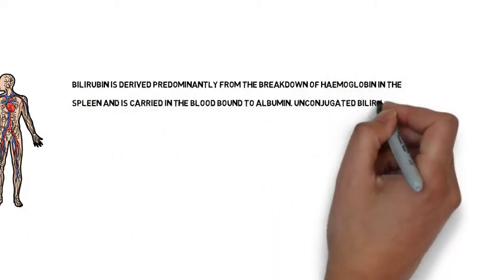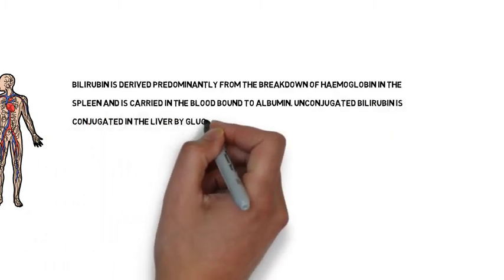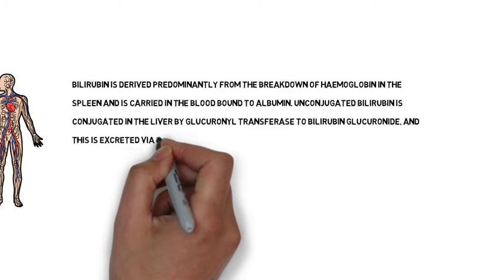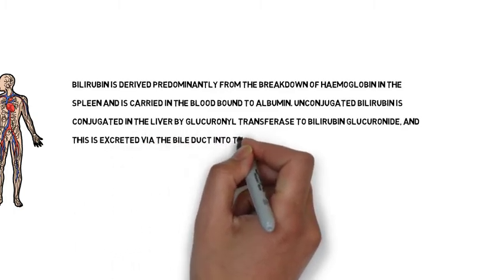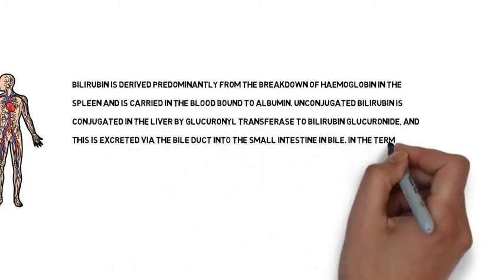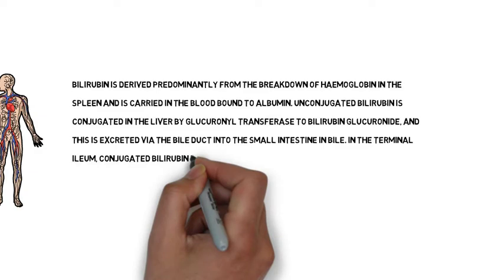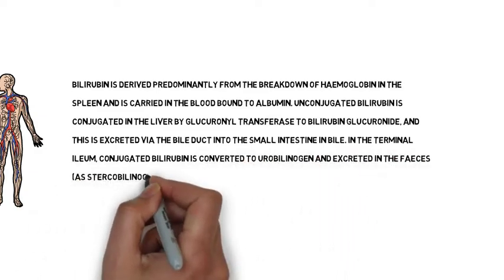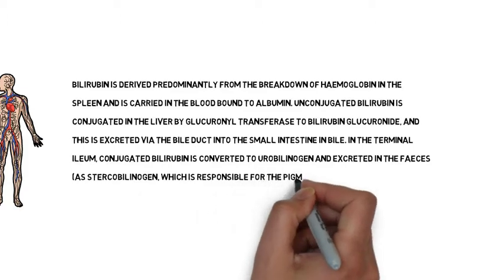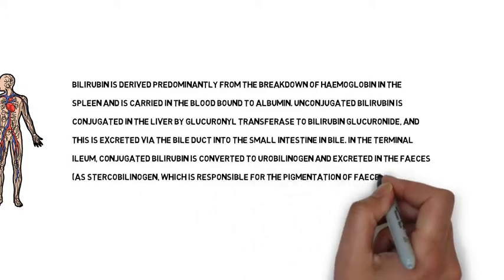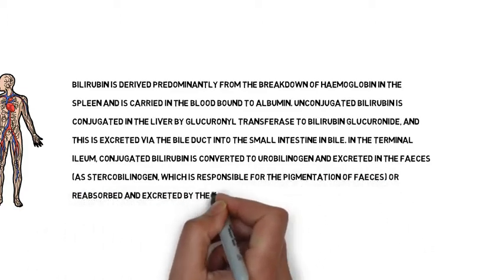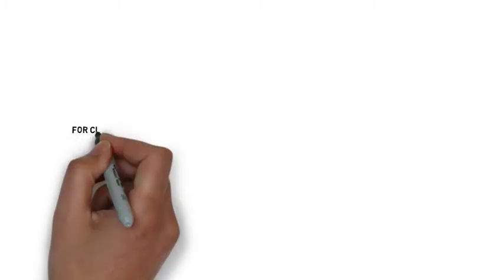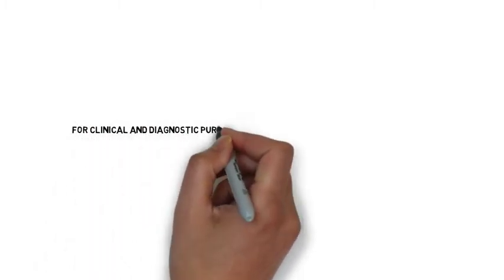Unconjugated bilirubin is conjugated in the liver by glucuronyl transferase to bilirubin glucuronide, and this is excreted via the bile duct into the small intestine and bile. In the terminal ileum, conjugated bilirubin is converted to urobilinogen and excreted in the feces as stercobilinogen, which is responsible for the pigmentation of feces, or reabsorbed and excreted by the kidneys.